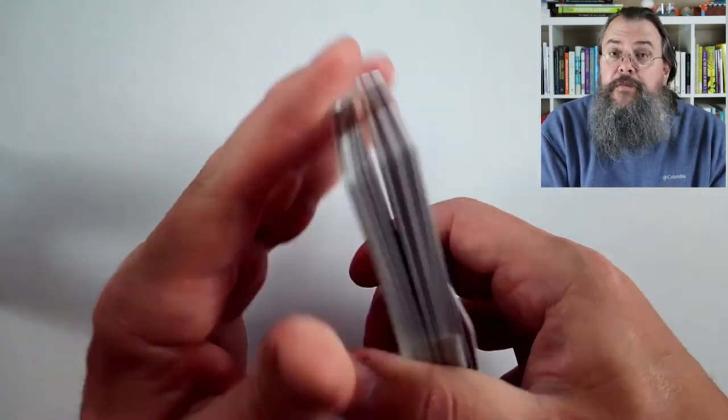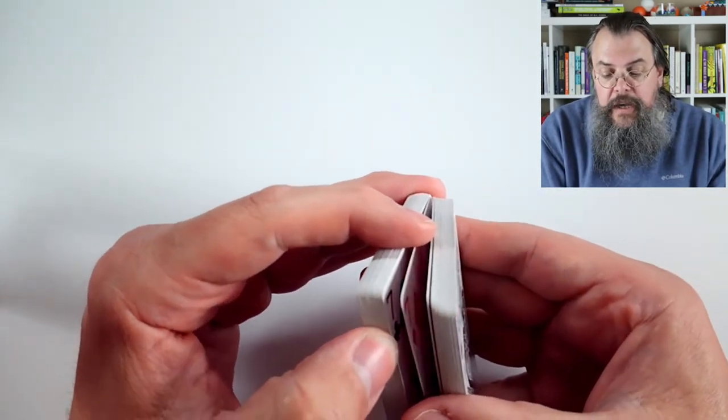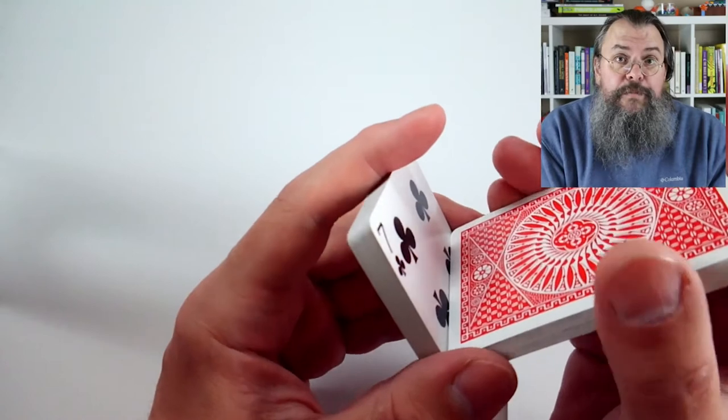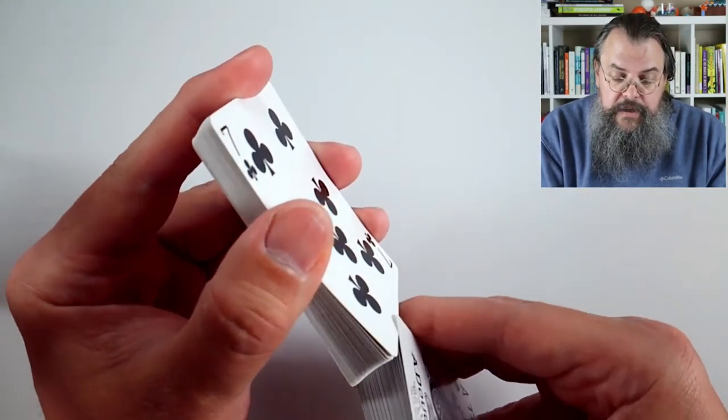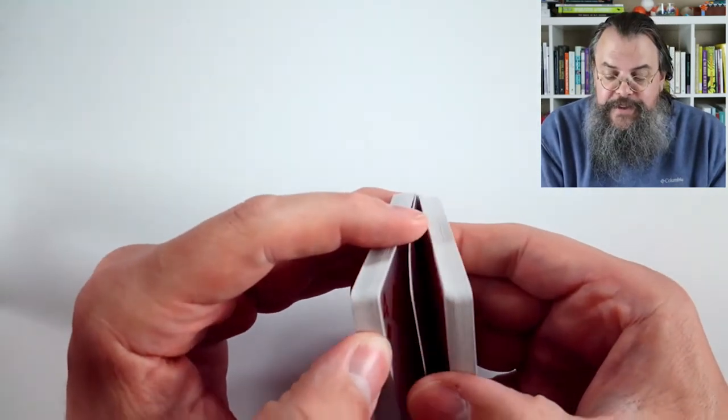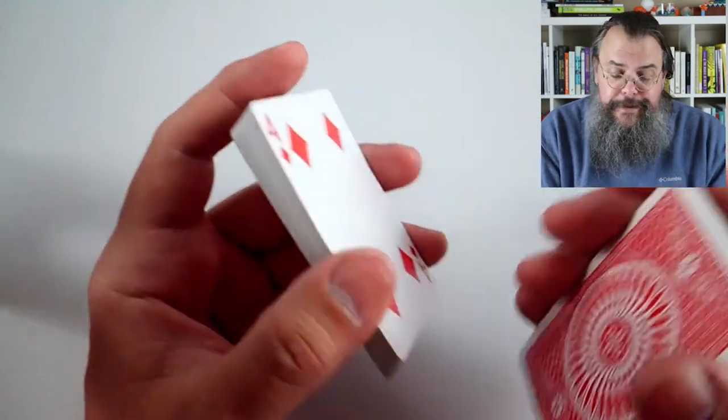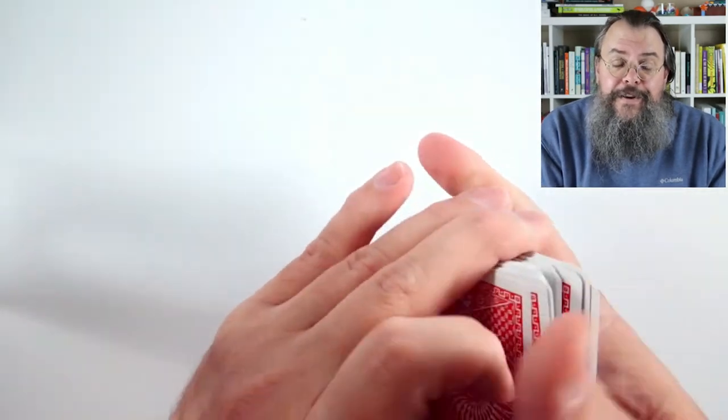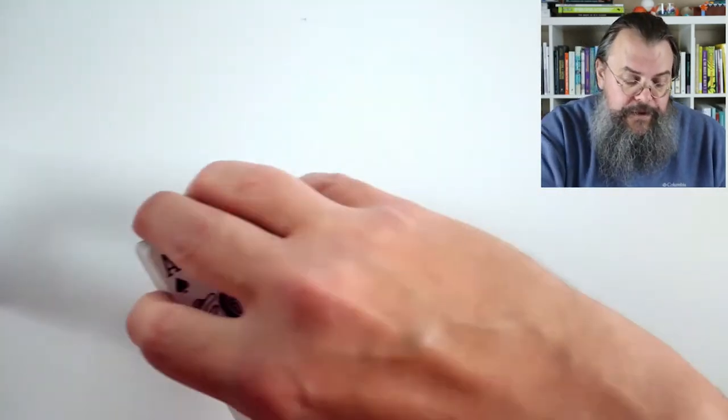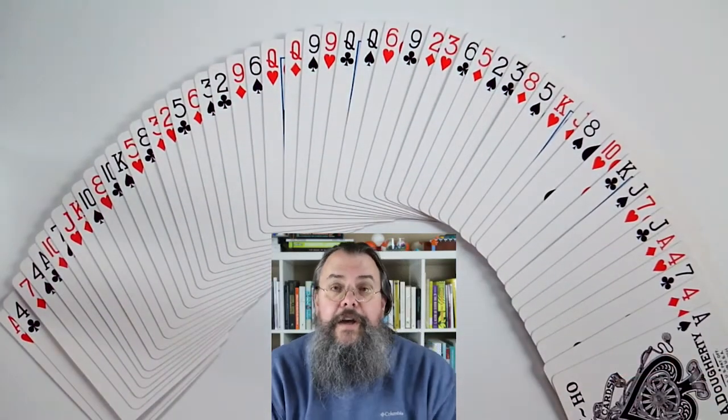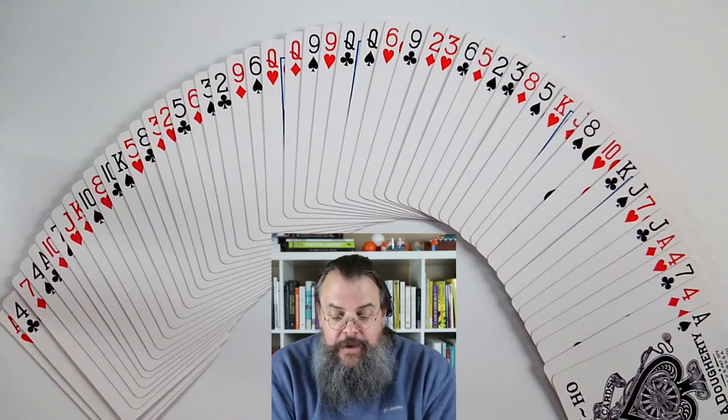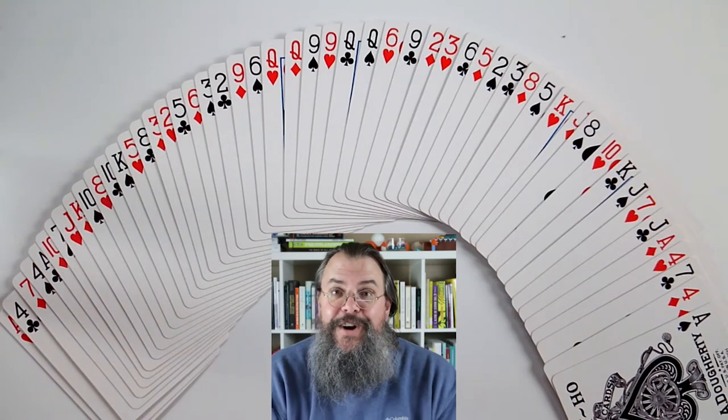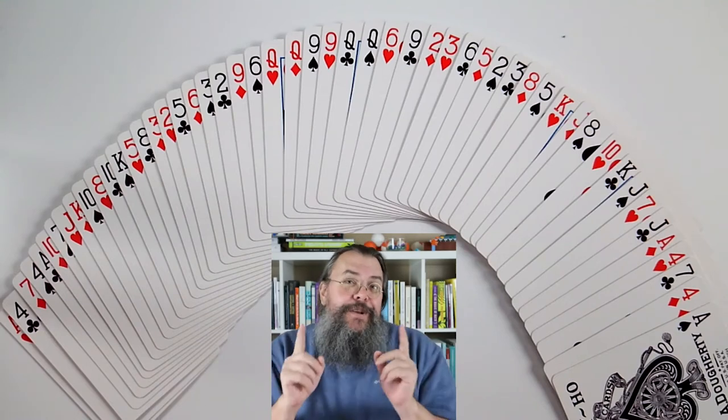First we take our deck and we've got to make sure we have it exactly in half. There we go, that feels about half. Then we're going to just put our cards together. And there we go. Now what's happened here? If you look, it's every other card. We're exactly alternating one side to the other side, back and forth.